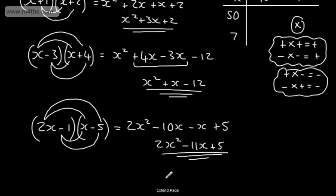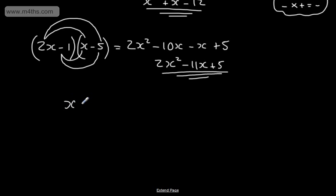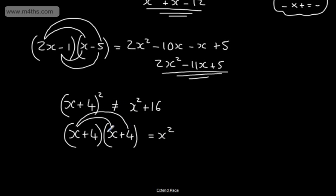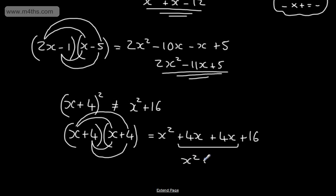Now (x+4) all squared. This does NOT equal x squared plus 16 — that's a killer error. (x+4)² means (x+4)(x+4): x times x = x squared; x times 4 = plus 4x; 4 times x = plus 4x; 4 times 4 = plus 16. Tidying up: x squared plus 8x plus 16.